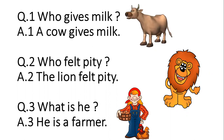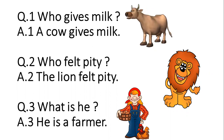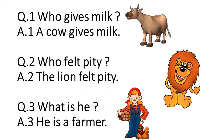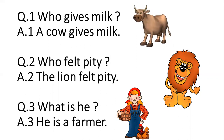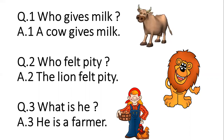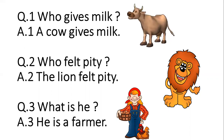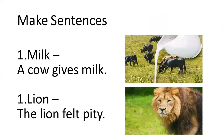Next question: W-H-A-T — what, I-S — is, H-E — he. What is he? And the answer is: H-E — he, I-S — is, a, F-A-R-M-E-R — farmer. He is a farmer.